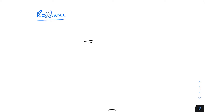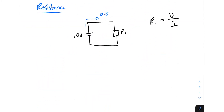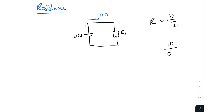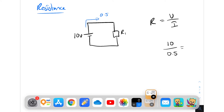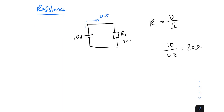Let's do an example — finding resistance. We've got a circuit with a battery and a resistor R1. We've got a 10 volt battery and a current flowing through the resistor of 0.5 amps. To find resistance, R equals V divided by I. So we take 10 volts divided by 0.5, and that gives you a 20 ohm resistor. So R1 is equal to 20 ohms.